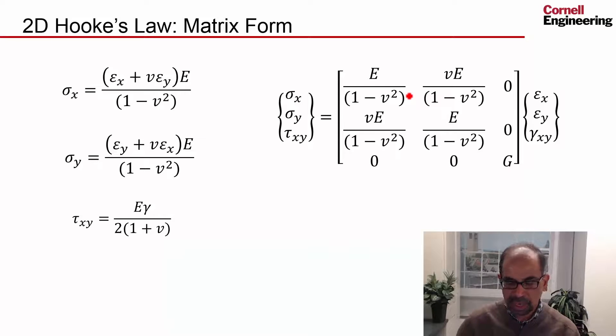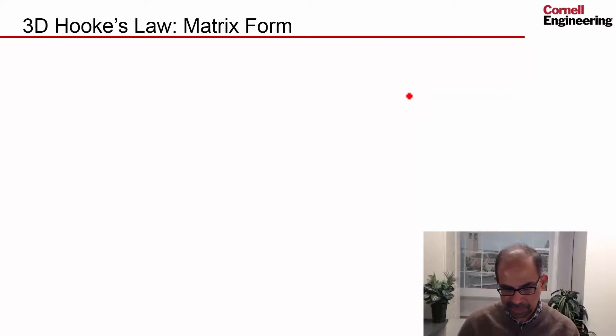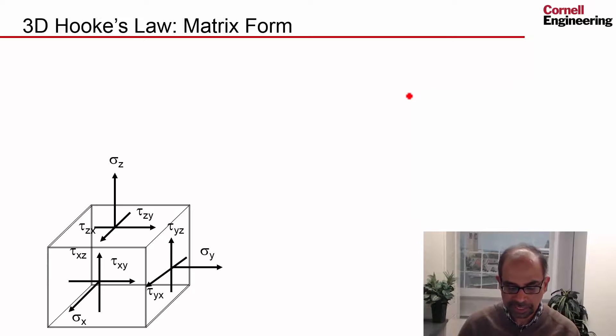We can extend this to 3D to get the 3D version of Hooke's law. Let's write this in the matrix form since it's compact. In the 3D version, you cannot ignore the normal stresses or the shear stresses in the z direction.